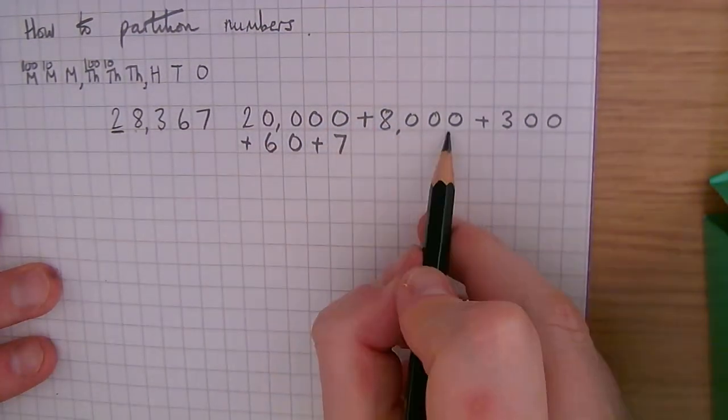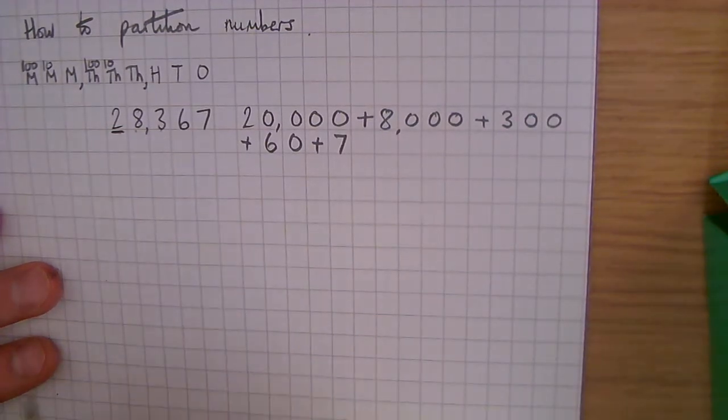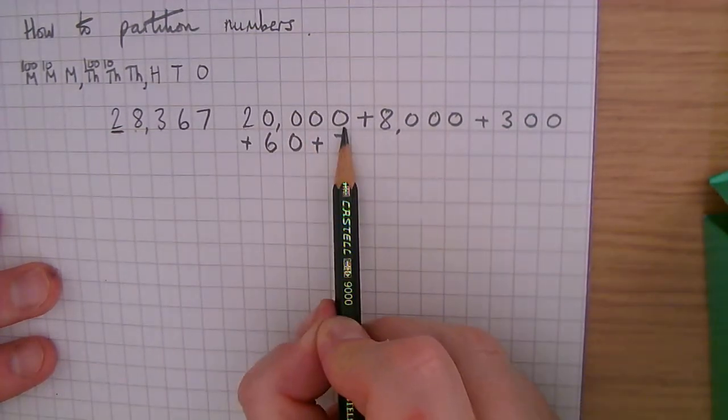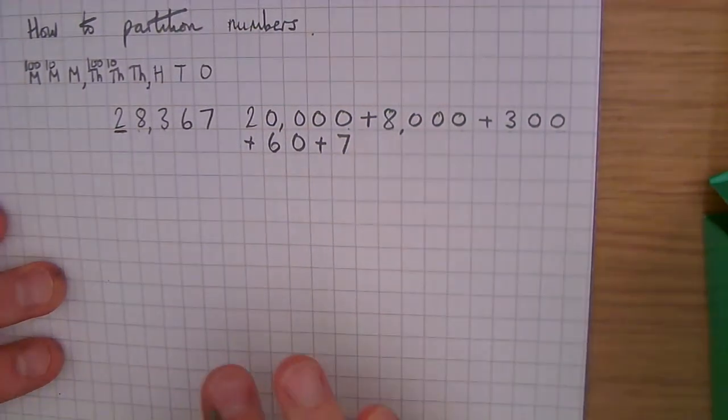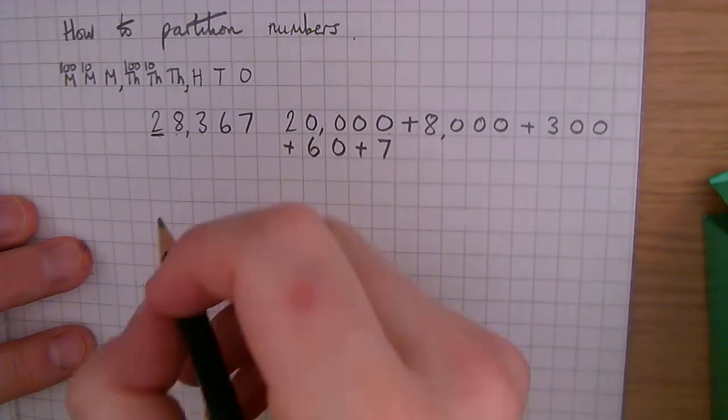So 28,367 is made up of twenty thousand, eight thousand, three hundred, sixty, and seven. Let's look at a larger number.